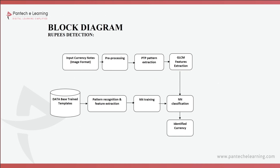For rupee detection, to identify a currency we first provide the database and show the test image. We provide the input image, then preprocessing takes place. The pattern is extracted — each sub-band is extracted with the help of DWT. Then using GLCM, features from each pattern are finalized. For the database, the same process is applied but for a group of images.